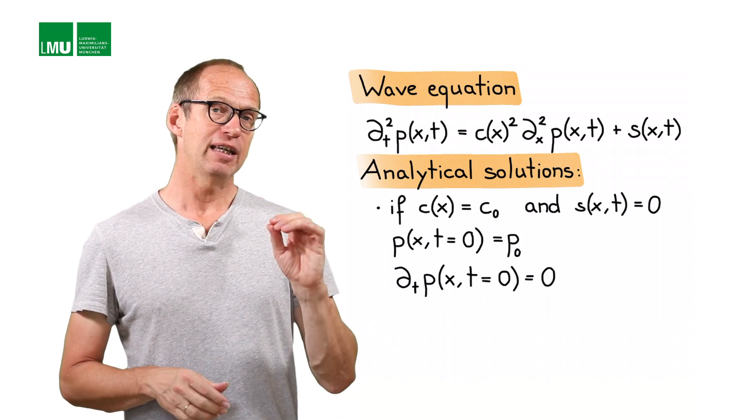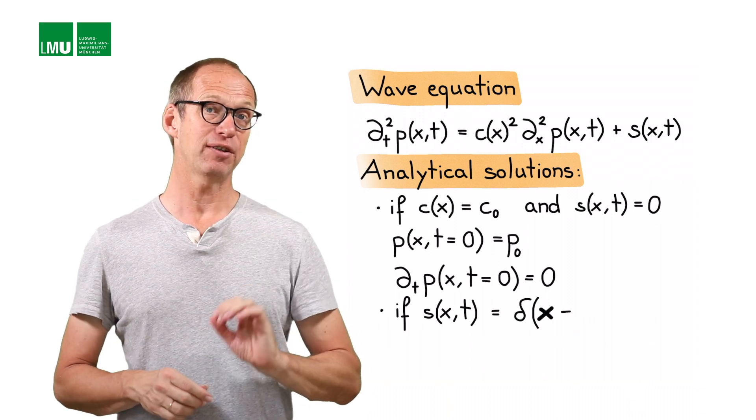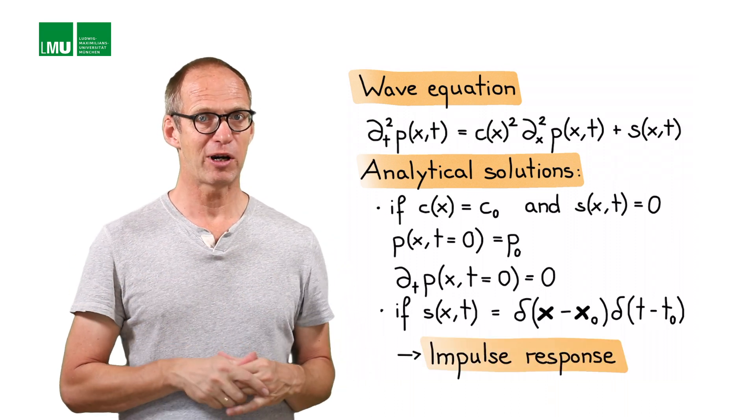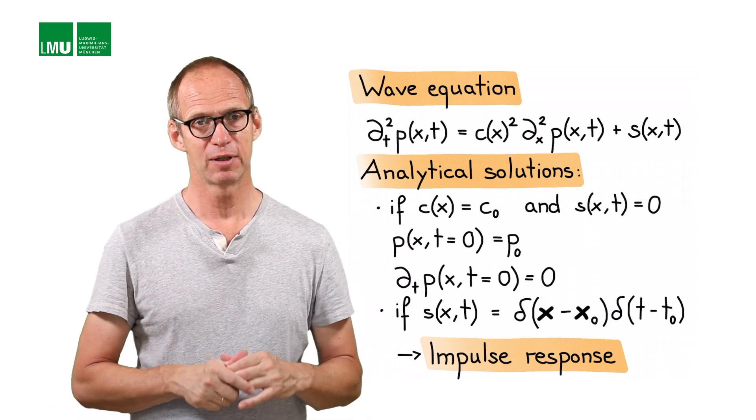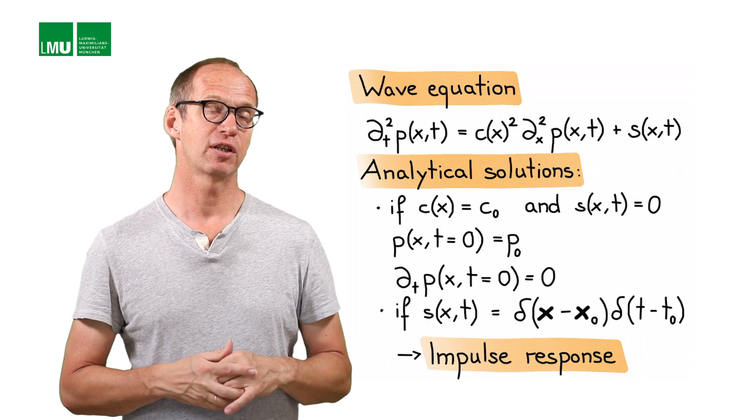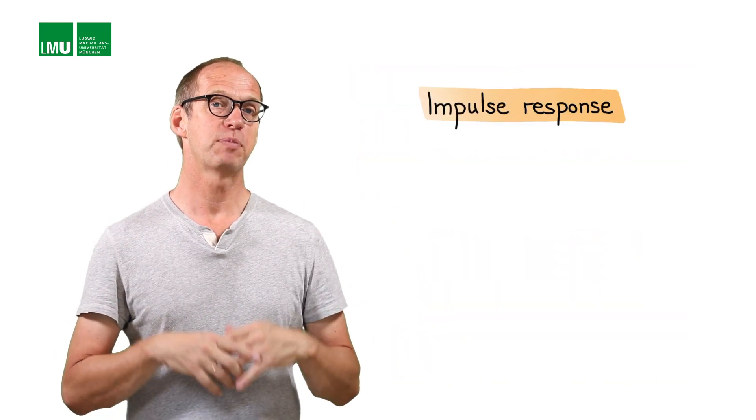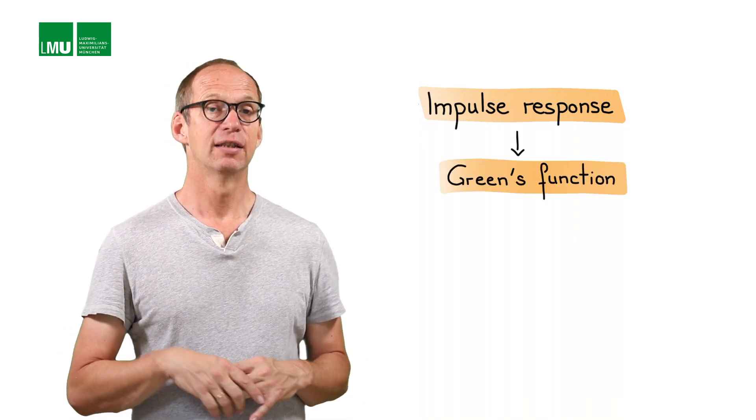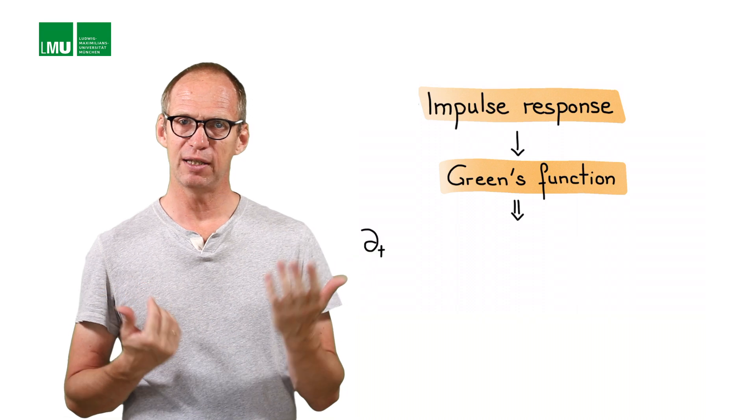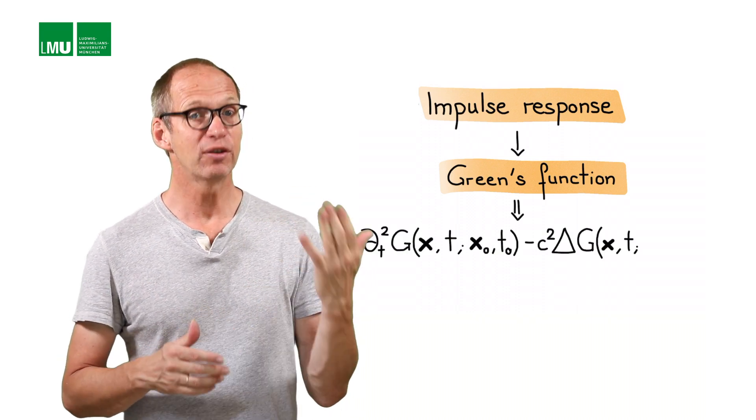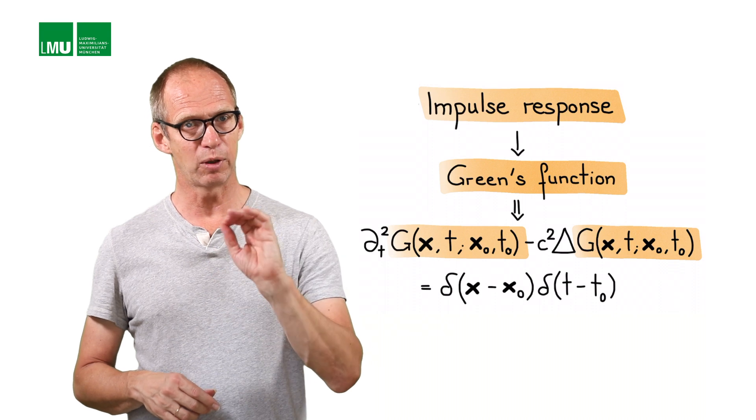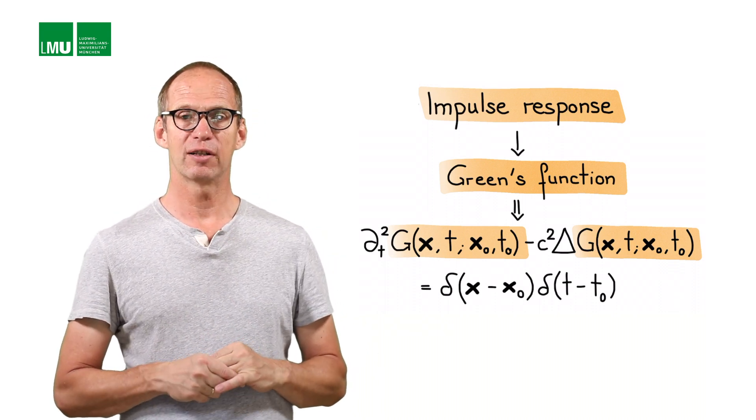The second situation is if the source term s of x, t actually is a delta function in x and t. That means we will get the impulse response of our partial differential equation in terms of a linear system. We will talk about linear system again at the end of this week, also a very important concept. The impulse response is basically the Green's function. If we have on the right hand side a source term in terms of delta functions in x and t, then we can basically replace the p with a capital G, which is the Green's function, the solution to an impulse response.